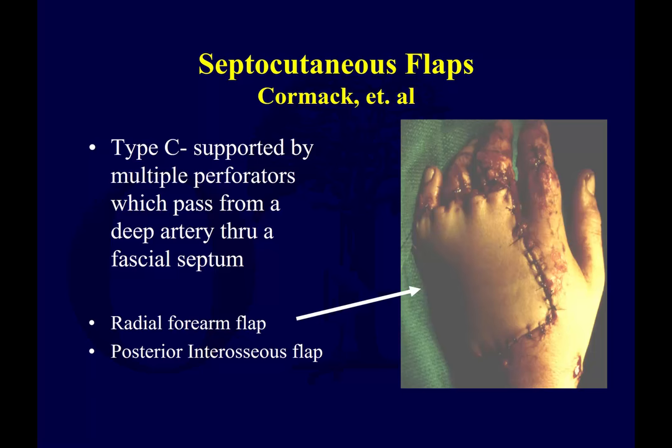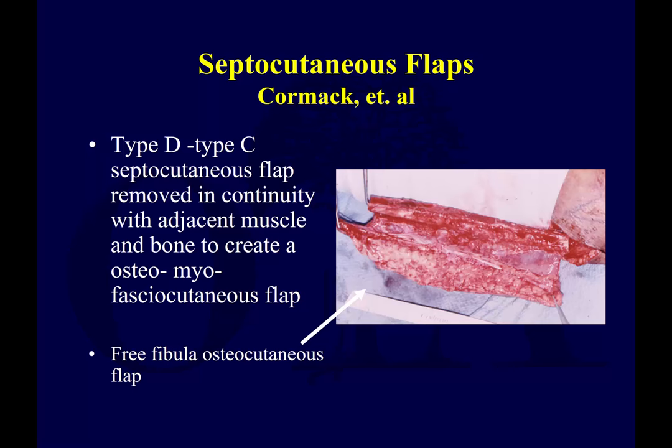Type C is supported by multiple small perforators along its length which reach it from a deep artery passing along a fascia or septum — the radial forearm flap was one of the first of this type to be described and is something of a workhorse in the upper extremity. Type D is a compound flap which incorporates other structures such as muscle or bone — a radial forearm flap can be raised with half of the diameter of the radius, or a fibular osteocutaneous flap can be used, as shown here in the image.